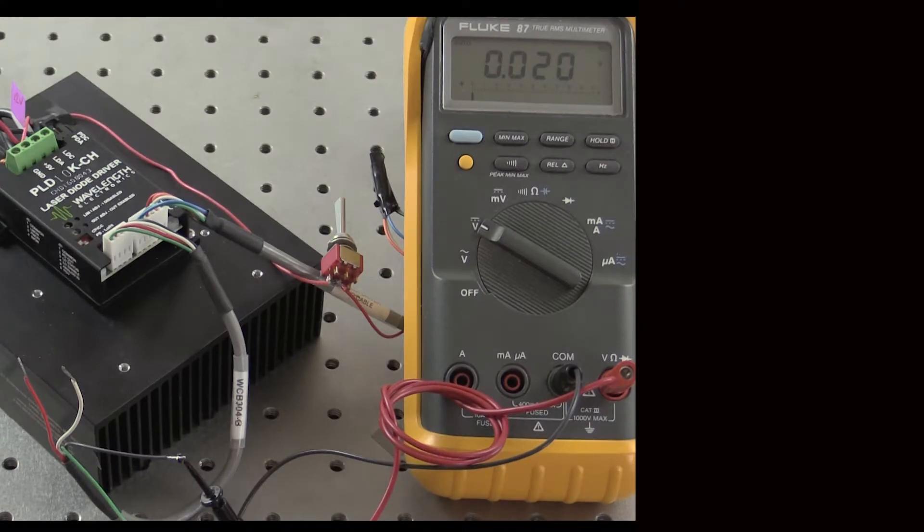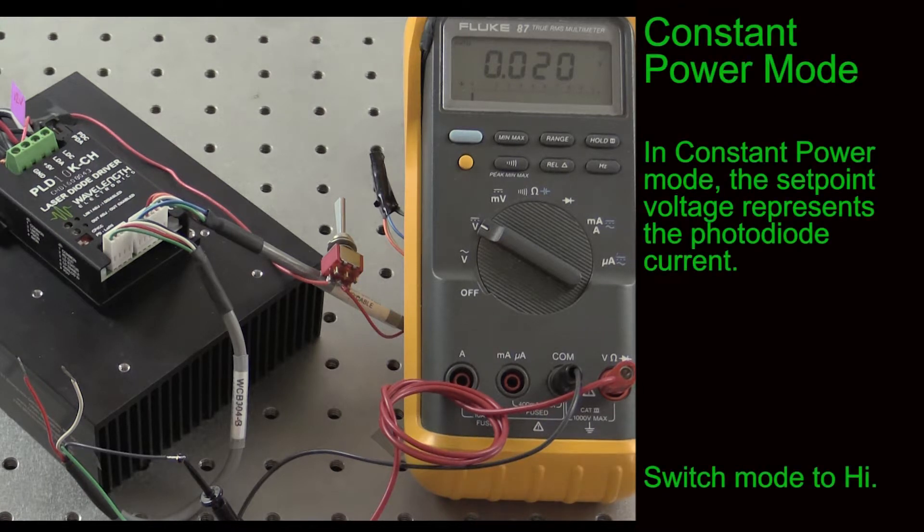The setpoint also needs to change. In constant current mode, the setpoint voltage represents actual laser diode current. In constant power mode, the setpoint voltage represents the photodiode current. Transfer functions are completely different.